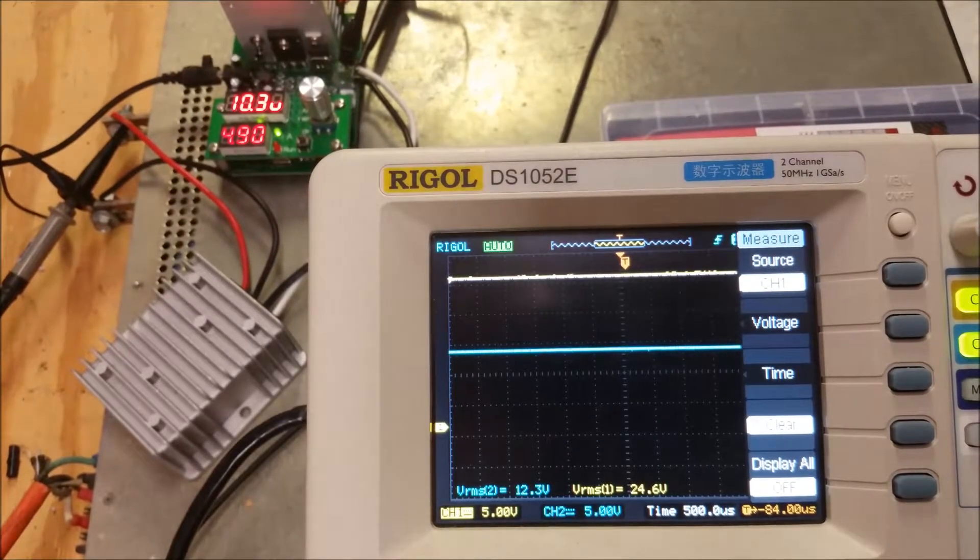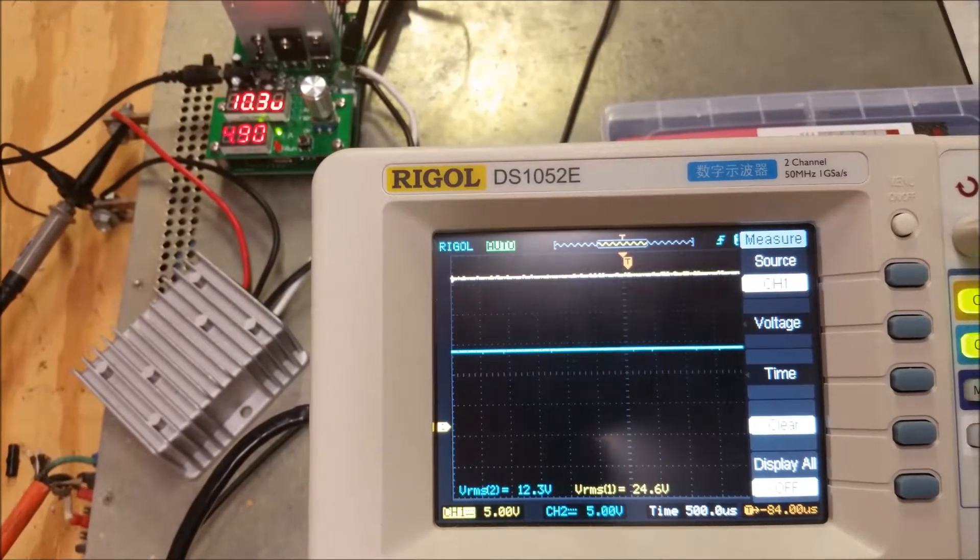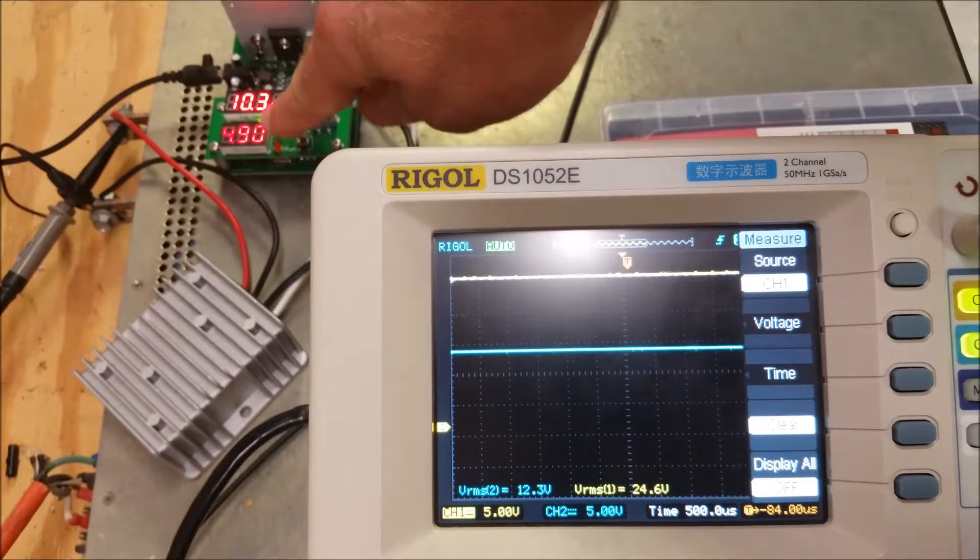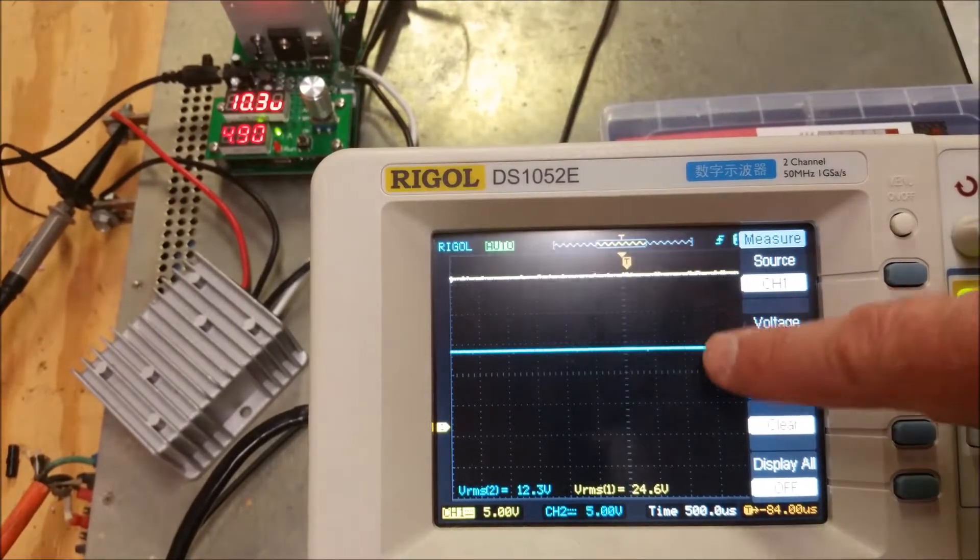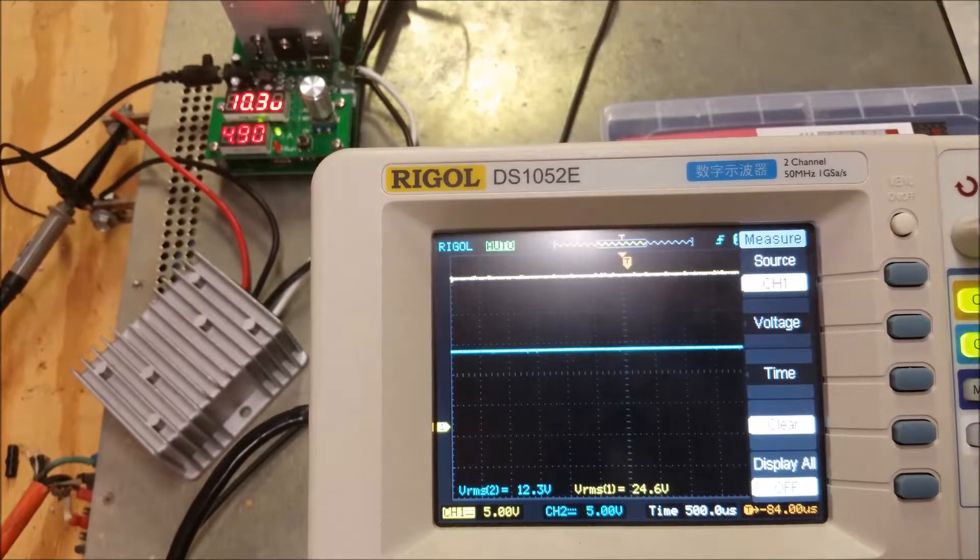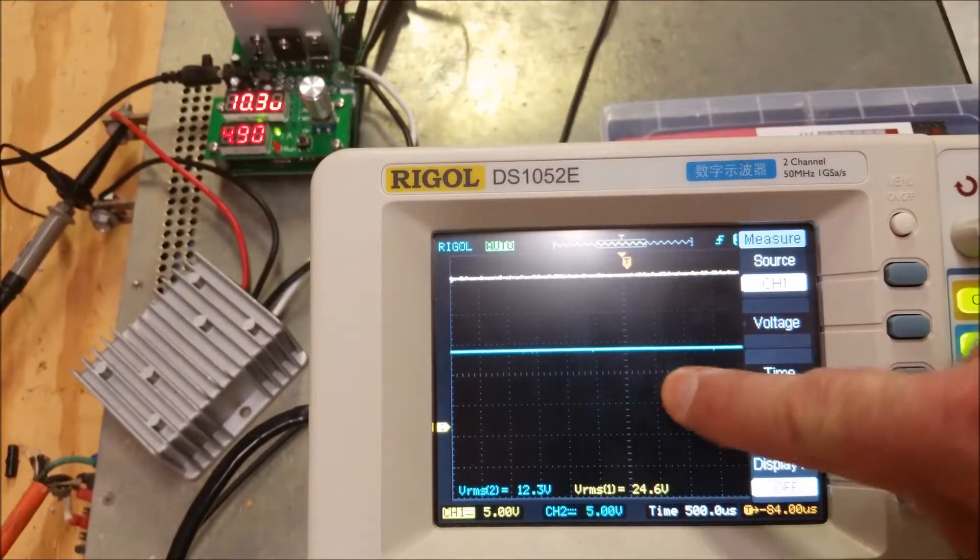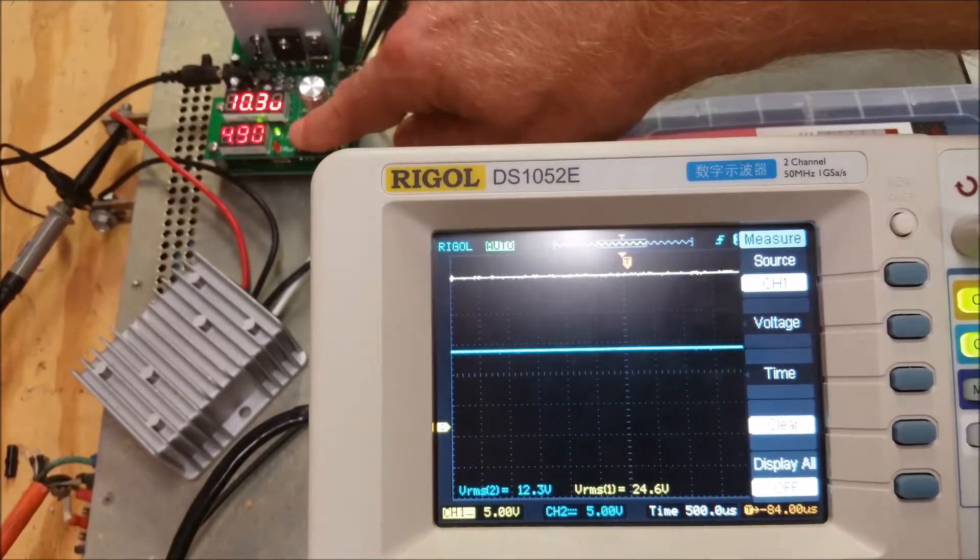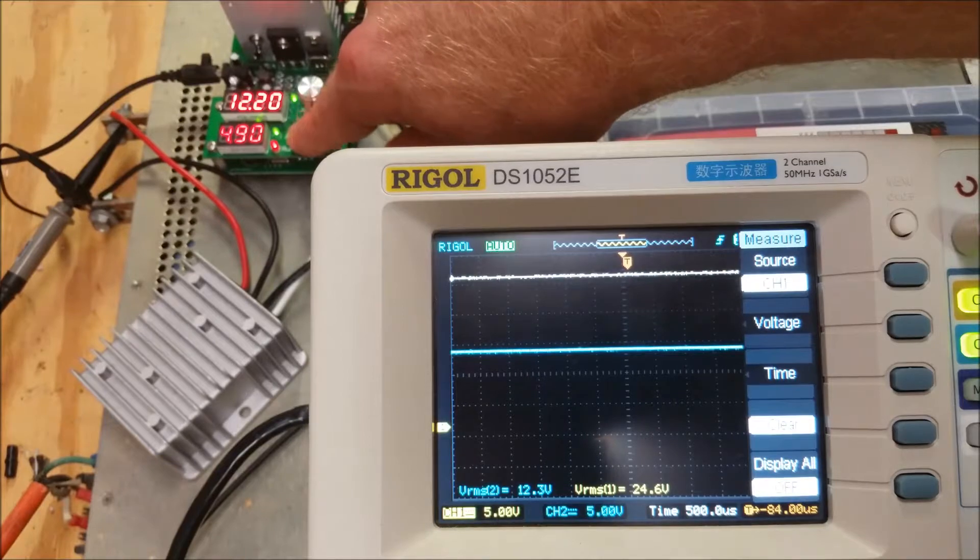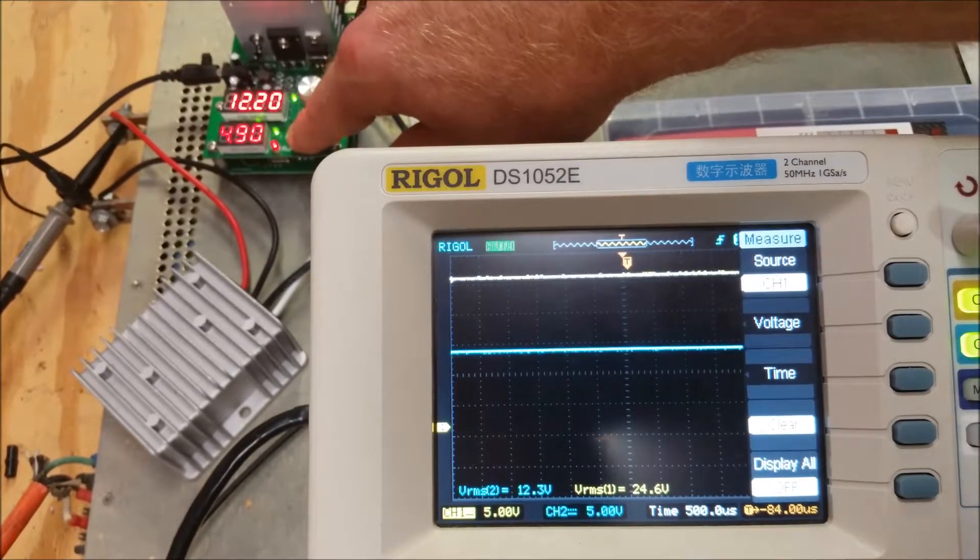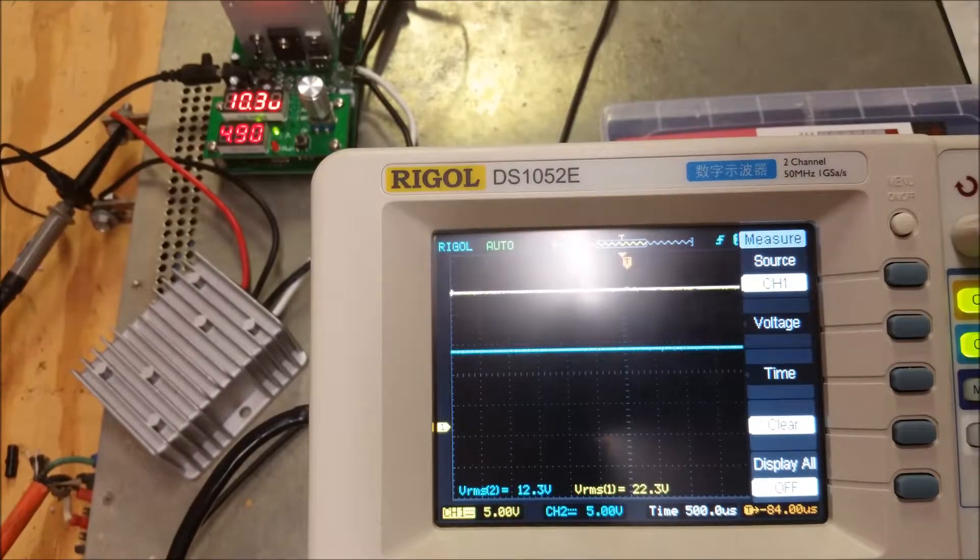So the next thing I want to test for is load regulation, which is how well can it handle putting different values of loads on and still maintain that voltage. So now we're at roughly 24 volts. I want to be able to see what happens to the output here if I turn it off and on, it's roughly a 5 amp load. So if it's a decent regulator you shouldn't see any large droops in this trace. So now I'm going to turn it off and on the load. And you see maybe a little bit of ripple, but roughly 5 amps, it's doing a good job.